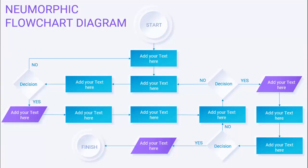In today's tutorial I'm going to show you how to create this new morphic flowchart design in PowerPoint. This is the starting point, and then depending on the requirement I've added different shapes. You can see it goes here, then there's a decision — if it is no it goes back, and if it is yes it comes back here and then it will finish.